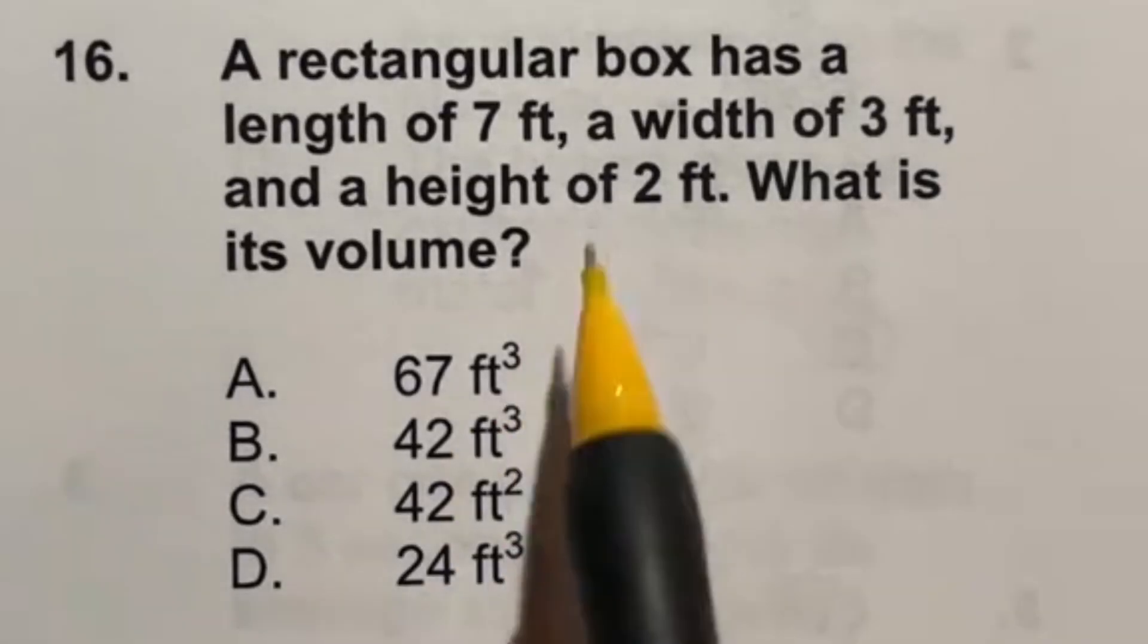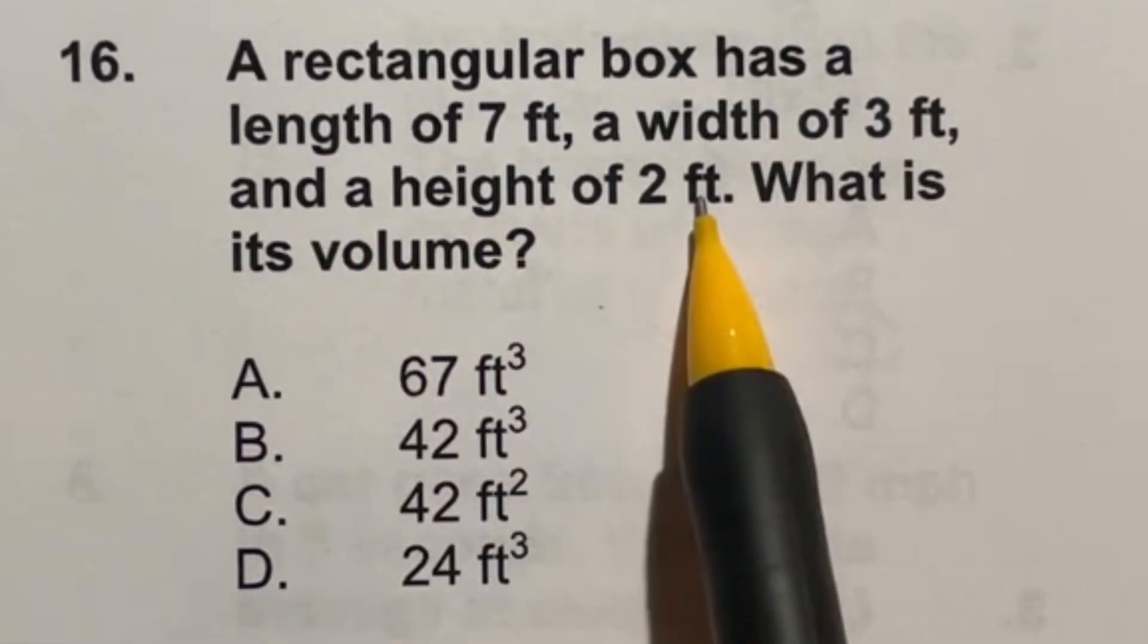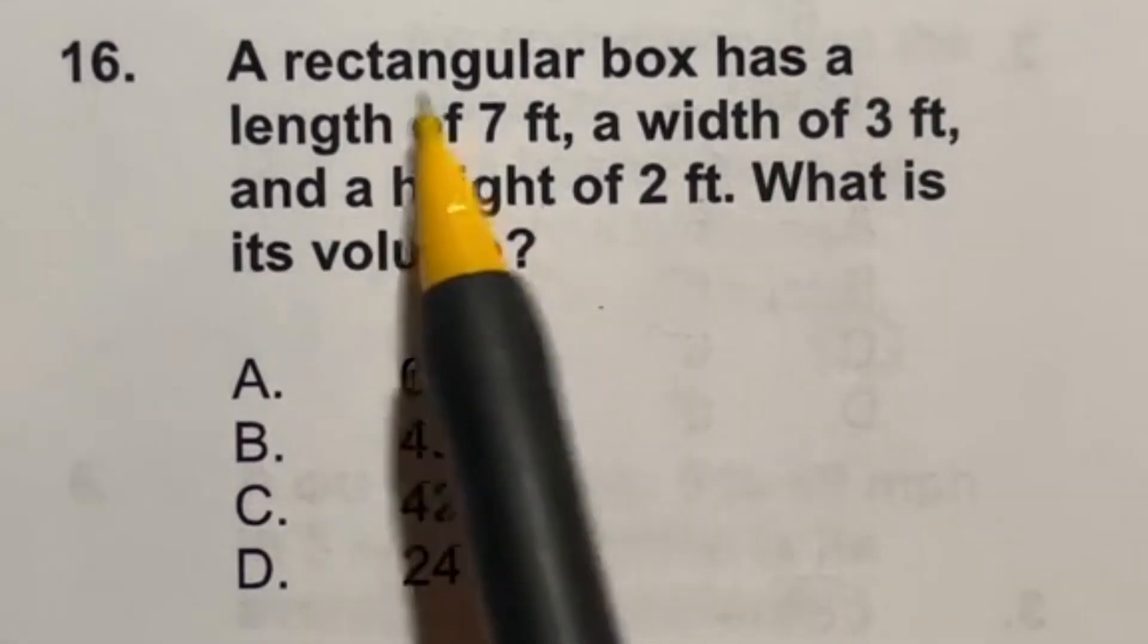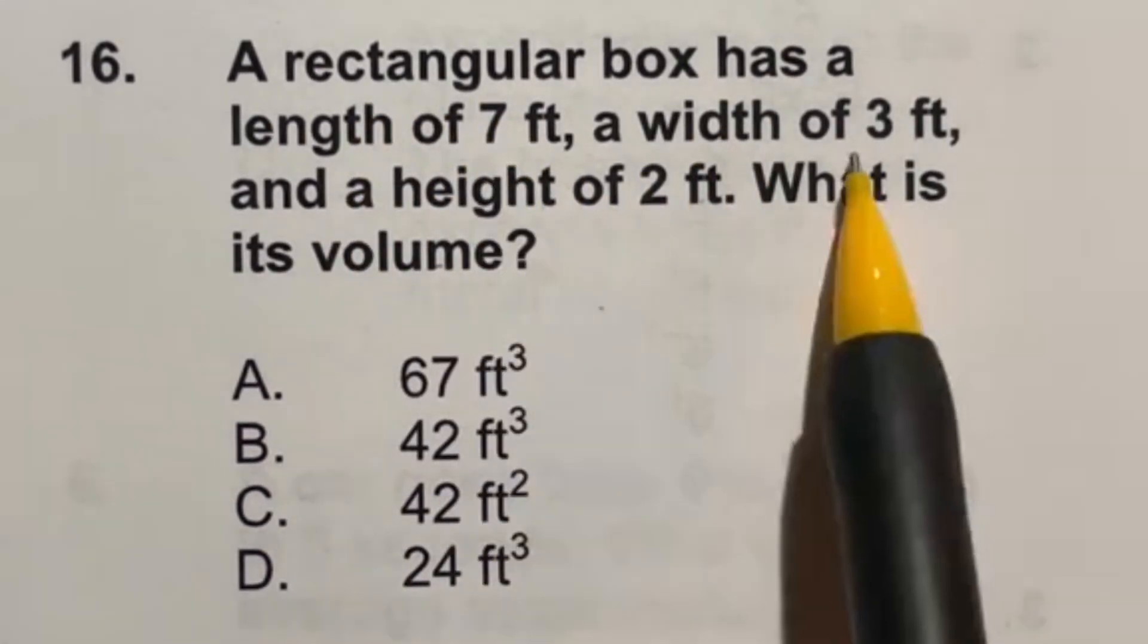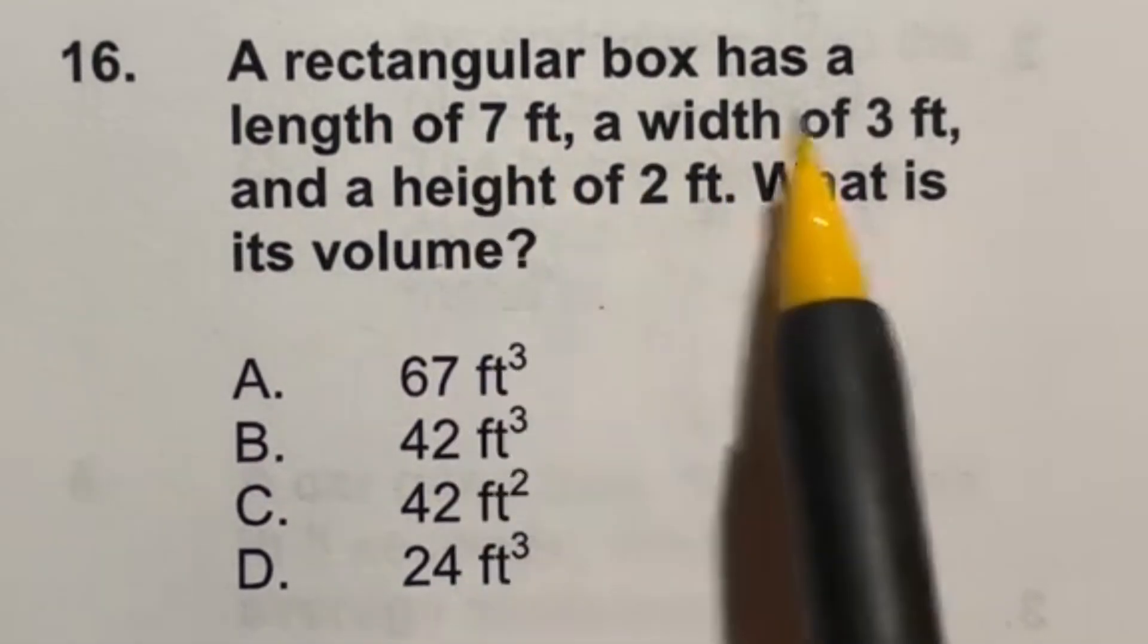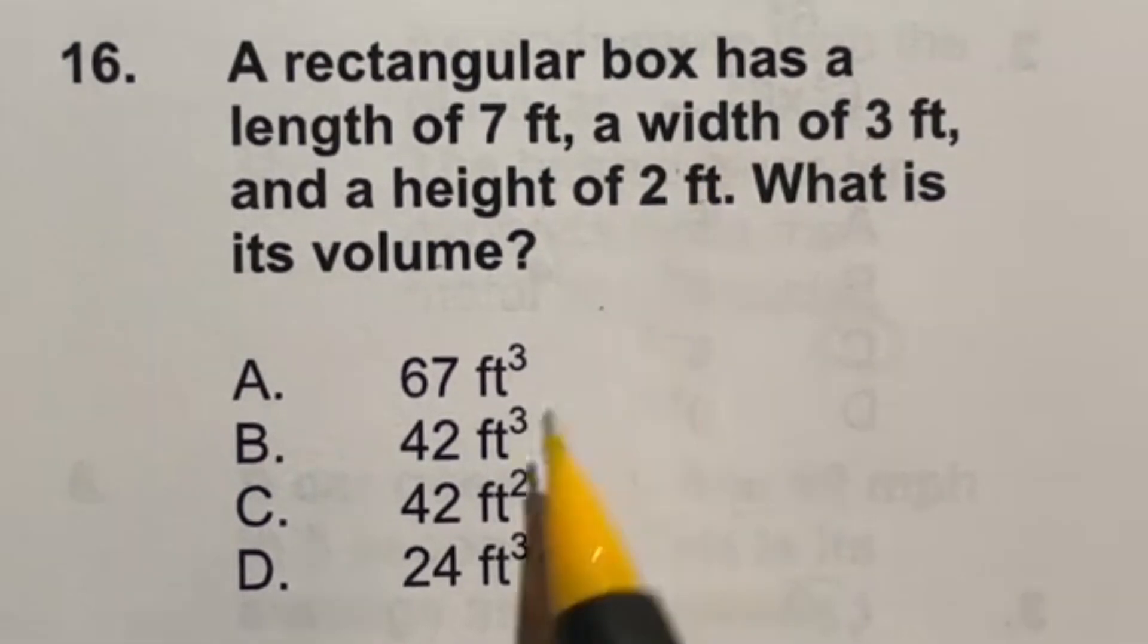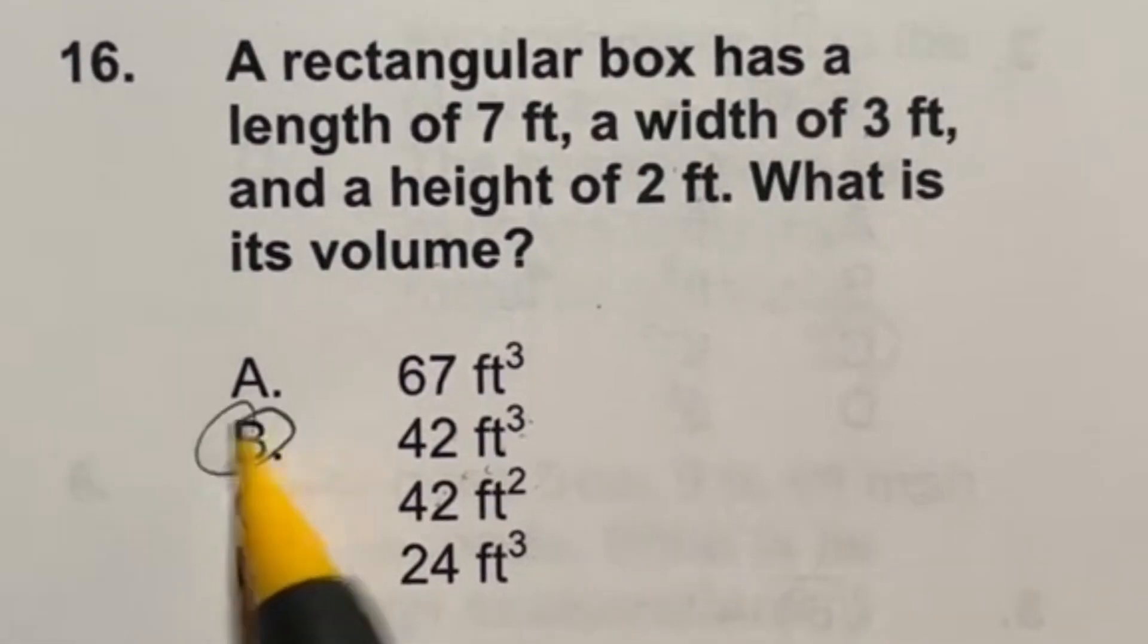A rectangular box has a length of 7 feet, a width of 3 feet, and a height of 2 feet. What is its volume? Well, this is a three dimensional shape. And when you have that with a rectangle, you just do the length times width times height. So we just need to multiply these three numbers together. Well, 7 times 3 is 21 times another 2 is going to give us 42. Notice how 42 is on here twice, because they want to see if you know that volume is always a unit cubed, whereas area is a unit squared. So in this case, we want the unit cubed because we're dealing with volume. So our answer is B.